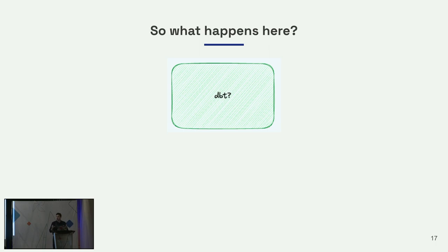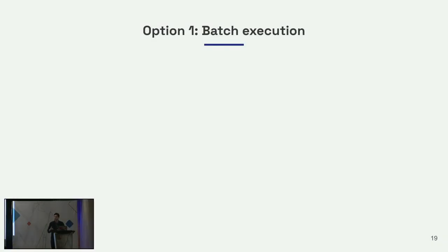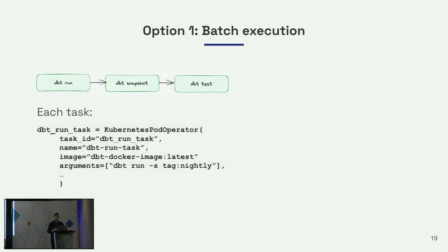Now I want to dive into what actually happens within the DBT job itself. Let's take the canonical DBT workflow where you probably want to run some models, snapshot them, and test them. The first way you can do this is what I call batch execution mode. In batch execution mode, you take that canonical DBT workflow and each job — the run job, the snapshot job, the test job — becomes its own Airflow task. The task could be a Docker operator or a Kubernetes operator pulling from the latest DBT Docker image, running a command like `dbt run` for all models tagged nightly.